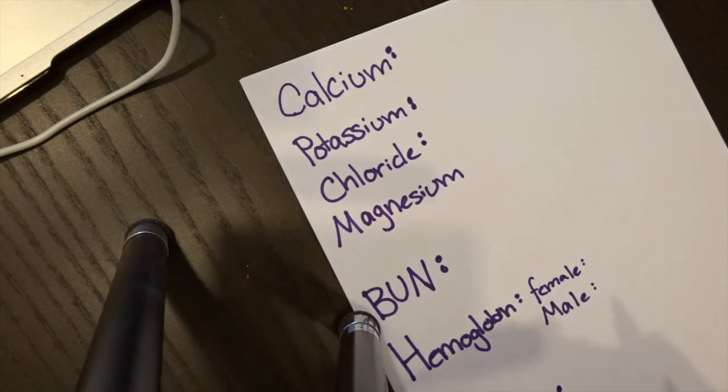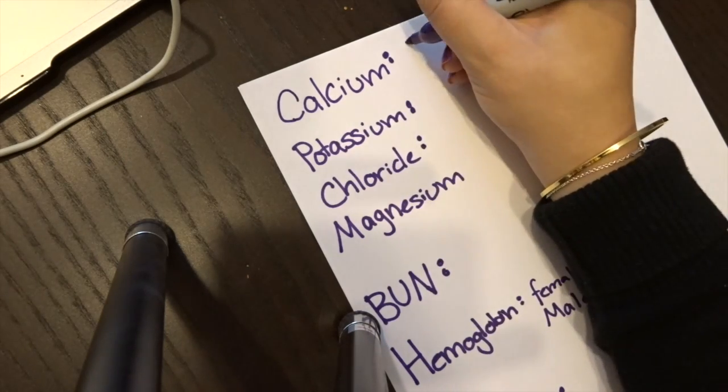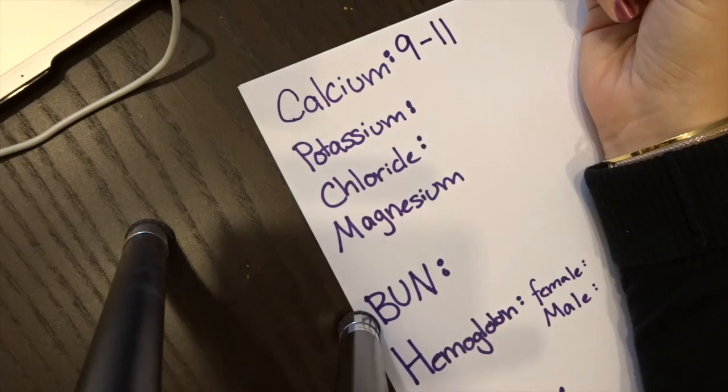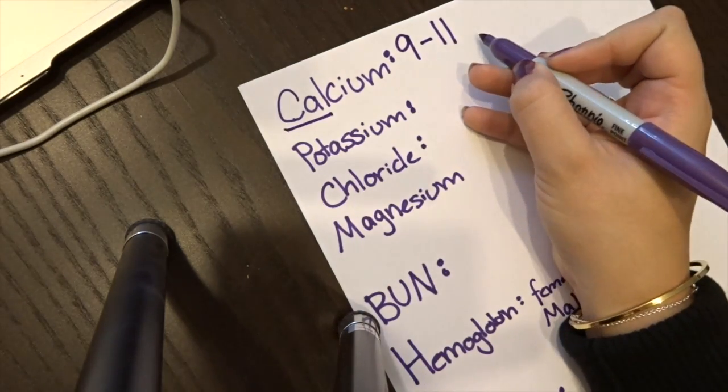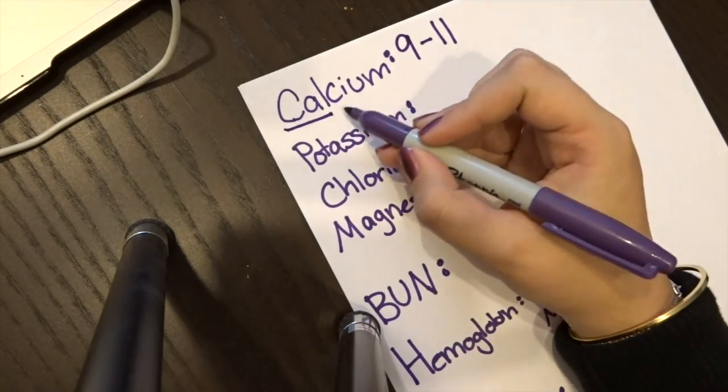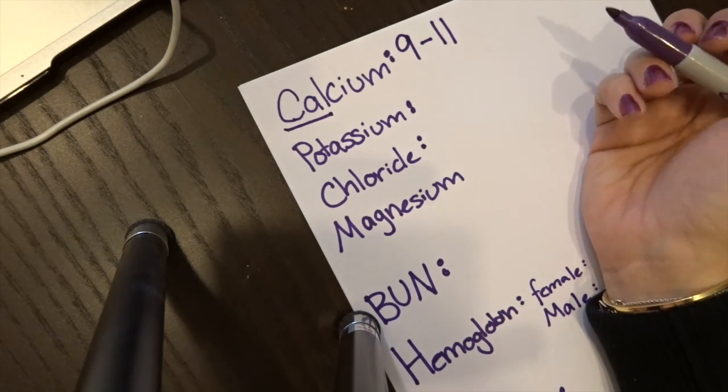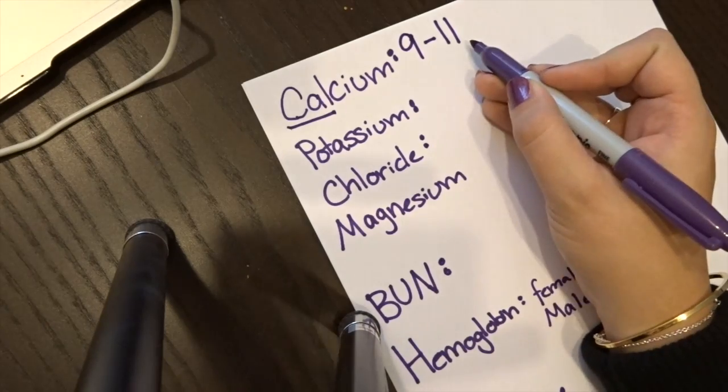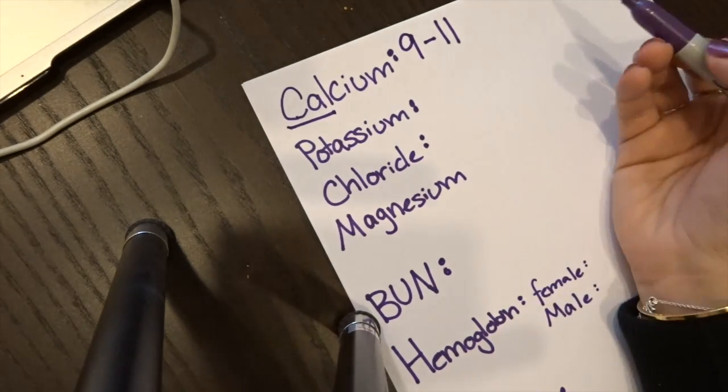So here we go. For calcium, the range is going to be 9 to 11. The way that I remember this is CAL 9-1-1. So calcium, CAL 9-1-1. I know some values say 8.5 to like 10.8, but for me it's just easy to remember this. And then on the NCLEX they give you critical lab values, so this works for me.